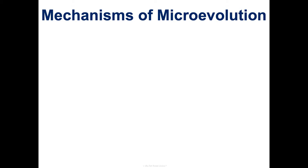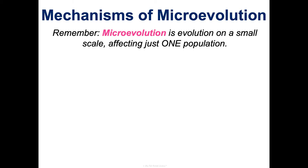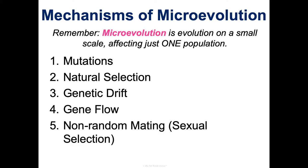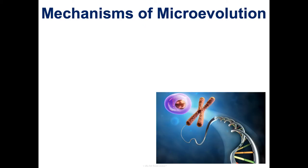For the scope of our class we're really going to be looking at evolution on a micro scale — at small populations, not looking at the evolution of entire species over millions of years. A few things that cause micro-evolution are: mutations, natural selection, genetic drift, gene flow, and non-random mating or sexual selection. I'm going to highlight each of these and then we'll be done with concept one.